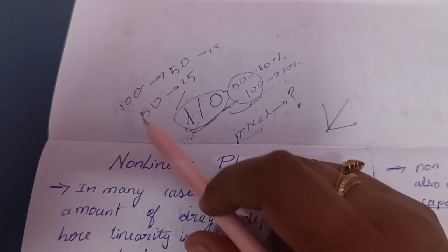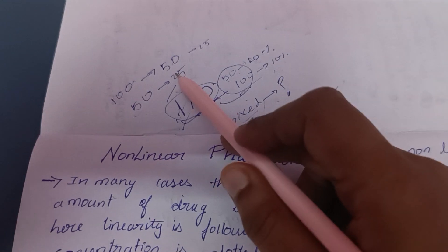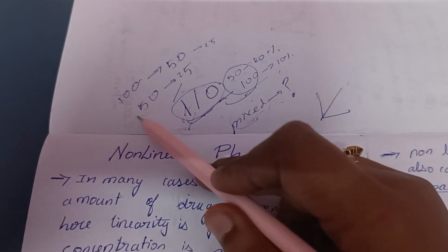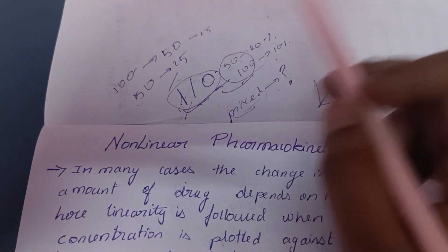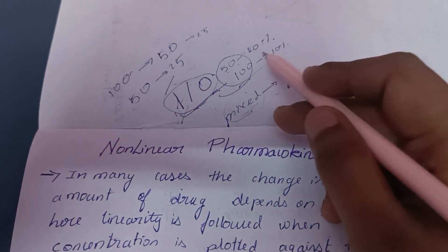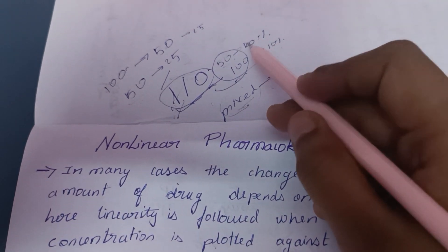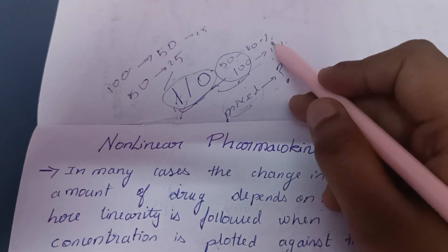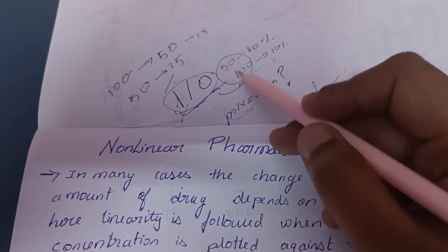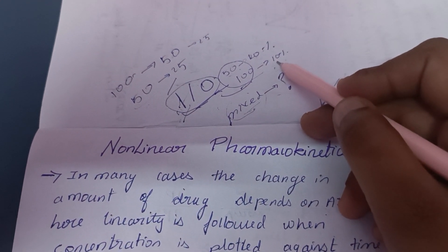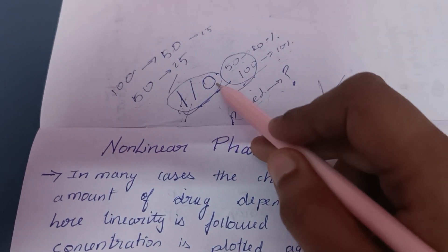First order is concentration dependent. If you have 100 mg, you have 50 mg absorption. Suppose 50 mg, you have 25 mg absorbed. Zero order is constant rate of absorption. Suppose absorption is 10%, then you have 50 mg and you have 10 mg absorbed. If you have 100 mg, you have 20 mg absorption. It is constant — that is zero order.